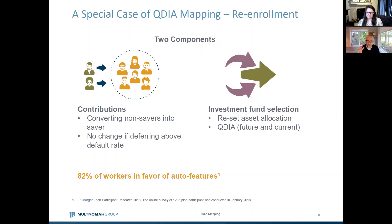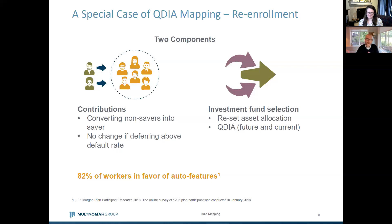There are really three different types of employees in a re-enrollment. First, employees who aren't contributing to the plan at all — these get moved into the plan at a set default rate, whether that's 3, 6, 7, or 10 percent, which the committee decides. Second, people who are participating but below the default rate — they get raised up to the default rate. Third, participants already contributing above the default rate — you don't impact their contribution. If they're contributing 7% and the default rate is 3%, you keep them at 7% because you don't want to bring them down to a lower contribution rate.